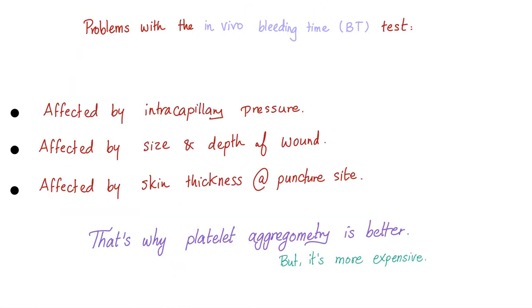What are the problems with the bleeding time? It's affected by intracapillary pressure, affected by the size and depth of the wound, and affected by skin thickness at the puncture site. That's why platelet aggregometry is better — but it's more expensive.